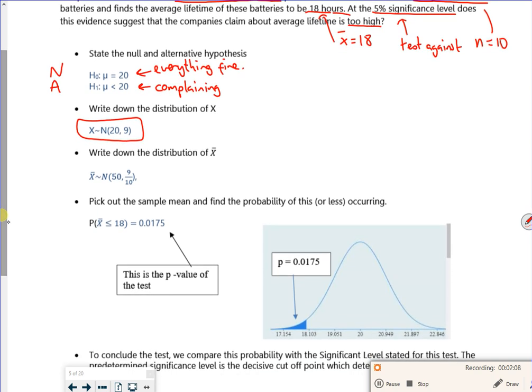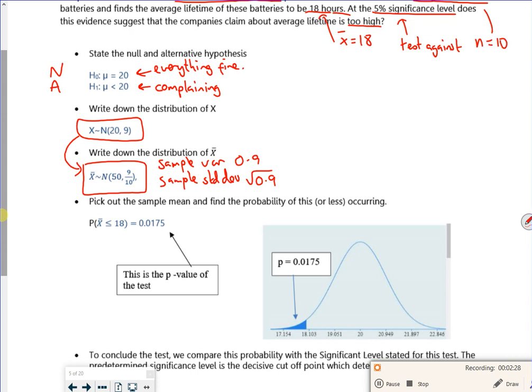Now what I've got here, I've got the original distribution and I've changed it into the sample distribution. So my sample variance is 0.9, my sample standard deviation, what I'd use in my calculator is root 0.9. So then it says, right okay, let's try it.